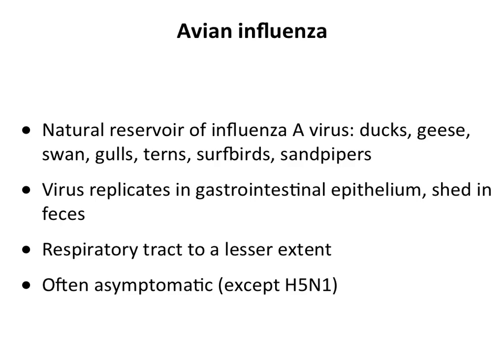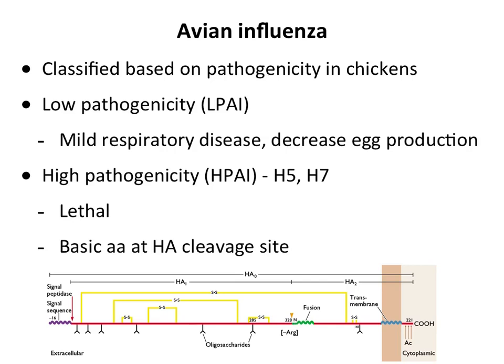There are no symptoms in the bird — with the exception of H5N1. Avian influenza viruses are classified according to their pathogenicity. We have low pathogenicity avian influenza (LPAI), which causes mild respiratory disease and a decrease in egg production — so these are of economic consequence. Then we have high pathogenicity avian influenza (HPAI), which includes the H5 and H7 HA subtypes. The other subtypes don't seem to be evolving to high pathogenicity strains.